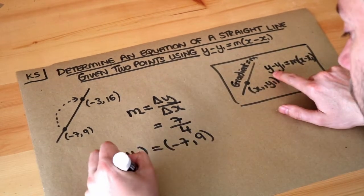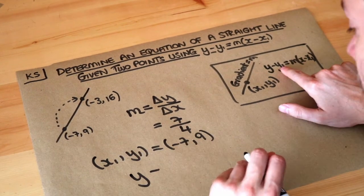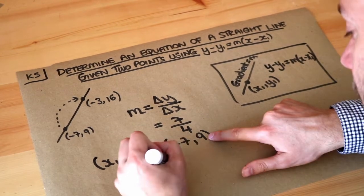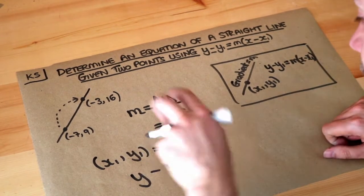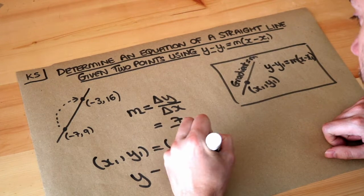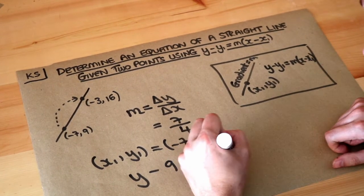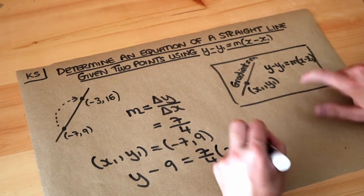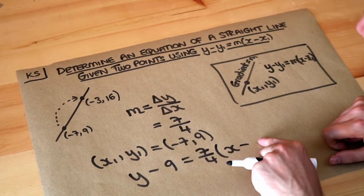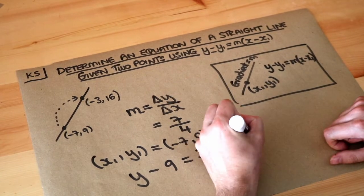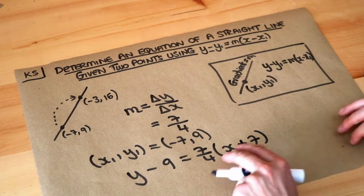So we've got y — y stays as y because it's a variable — minus y1, which is 9, equals m, which is 7 over 4, brackets x — x is just the variable x — minus x1. The x1 is minus 7, so we're minusing minus 7, which is the same as adding 7, because two negatives make a positive.